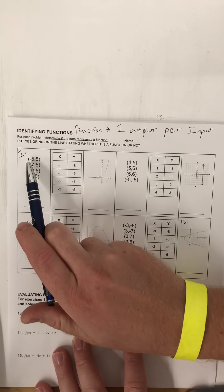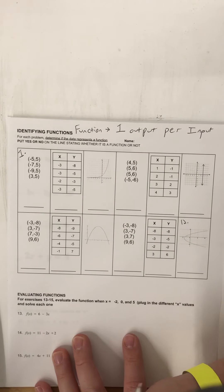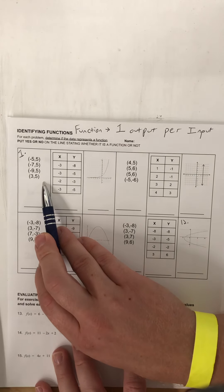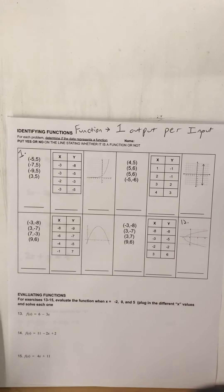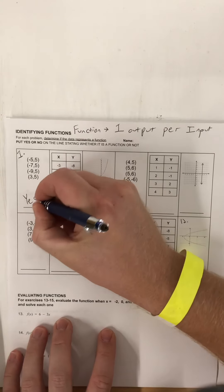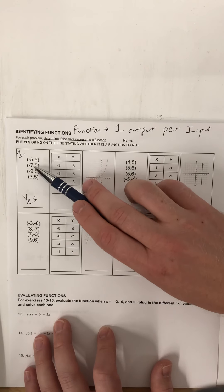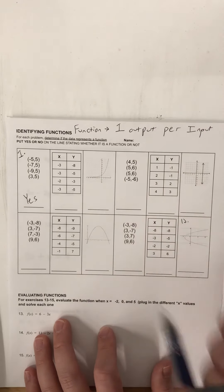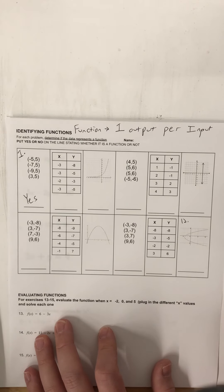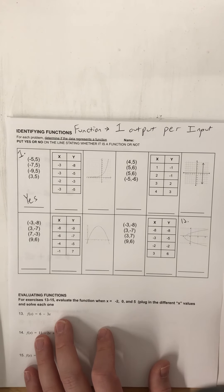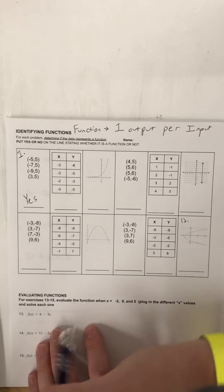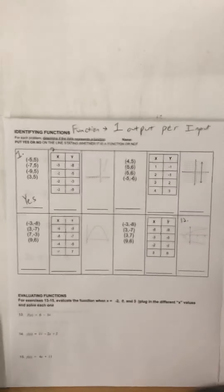If we look at number one, we have different x-values — inputs negative five, negative seven, negative nine, and three. Those are all different, and they all have one output. Someone unmute themselves — is this a function or not? Christopher says yes — awesome job, it is a function! Even though these inputs have one output each, each input is different, so each one input has one output.